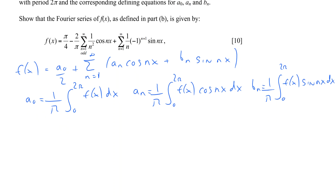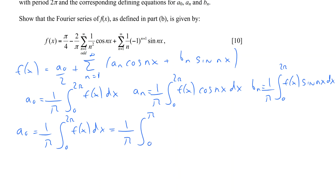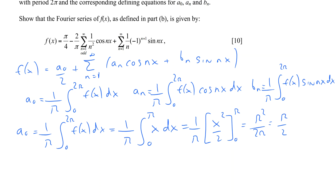The rest of the question requires us to find a₀, aₙ, and bₙ. Starting with a₀: it is given by 1 over π times the integral between 0 and 2π of f(x) dx. Looking at the function, it is only non-zero between 0 and π. Between π and 2π it equals 0, so we integrate from 0 to π where the function equals x. That gives 1 over π times x²/2 evaluated from 0 to π, which gives π²/2 divided by π, equal to π/2. So a₀ equals π/2.